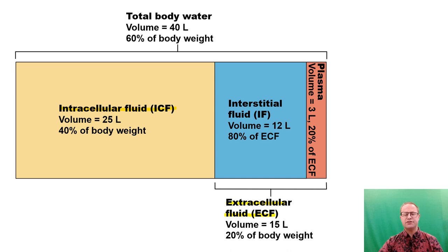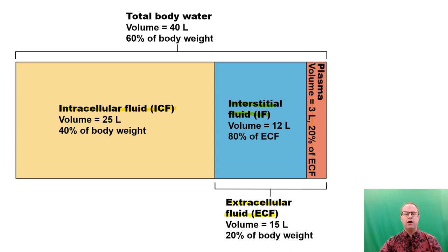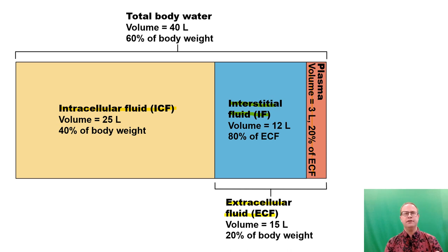The extracellular fluid is subdivided into two compartments: interstitial fluid, which is the fluid in between the cells — outside the blood vessels but not inside the cells — and plasma fluid, which is in our bloodstream. Plasma volume is only about 3 liters in most people, because the other 2 liters of blood volume are actually made up of blood cells. So big picture: there are two compartments, extracellular and intracellular.